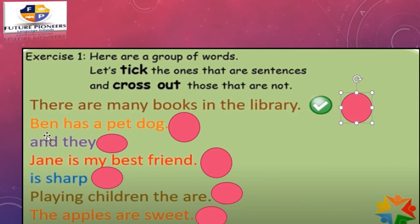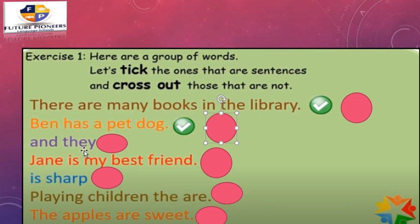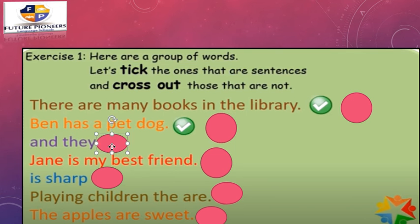Let's see the next one: Ben has a pet dog. Does it give you a complete thought? Yes — the sentence is about Ben and he has a pet dog. The B in Ben is capital and it ends with a period. Ben is the subject, 'has' is the verb. It's a correct sentence — let's put a tick. What about 'And they'? It doesn't give a complete thought — we don't understand anything from this. It has no verb and no subject, doesn't begin with a capital letter, and there's no period. This is not a sentence — let's put a cross.